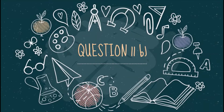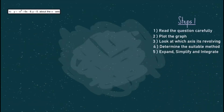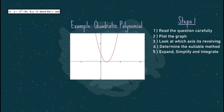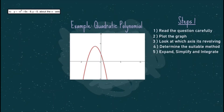This is question 11b. Following the steps shown in question a, let's solve the question together. After reading the question, let's plot the graph. The equation is a quadratic polynomial, which would normally be a u-shaped graph. However, due to the negative coefficient at the front, the graph is n-shaped or inverted. The equation also has a maximum point since the leading coefficient of x squared is less than 0.